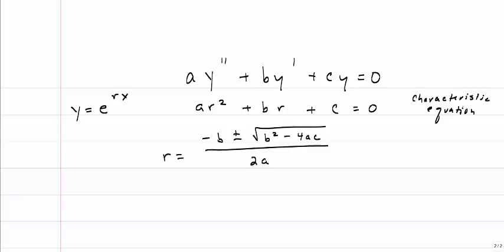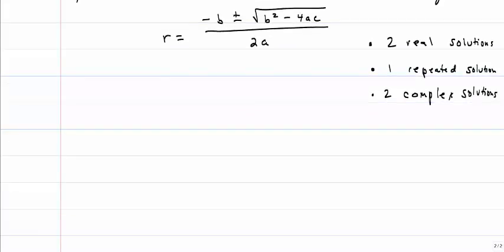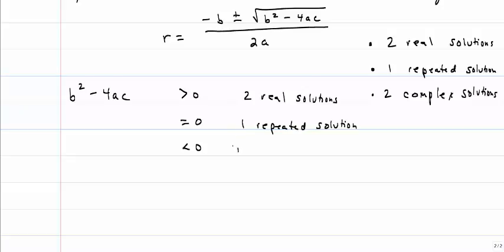So remembering what happened in algebra when we had a quadratic equation, we have three situations. We could end up with two real solutions. That's the example we just did. We could end up with one repeated solution, and we could come up with two imaginary solutions, or two complex solutions. What tells us what kind of solutions we have is the bit under the square root sign. It's also called the discriminant. If this is positive, we have two real solutions. If it's equal to 0, then we have one repeated solution. And if it's negative, then we have two complex solutions.